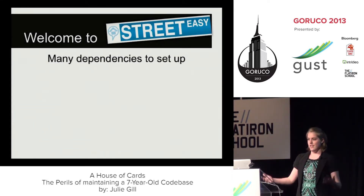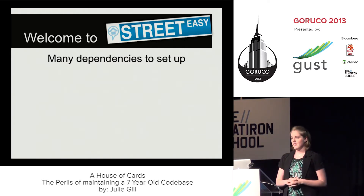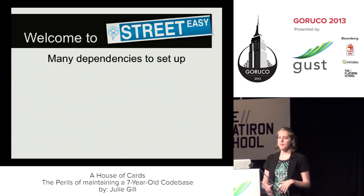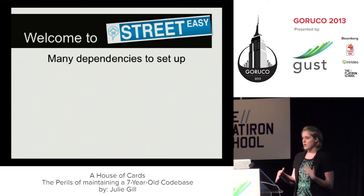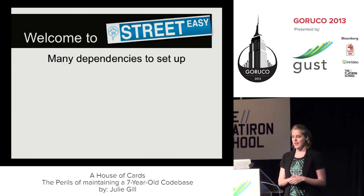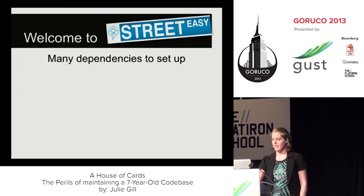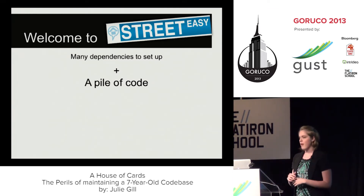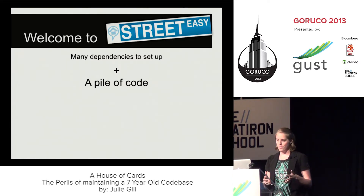So, welcome to StreetEasy. I spent my first week setting up my dev environment. There are so many dependencies to set up — homebrew, MySQL, RVM, all the gems, Chef and Knife, ImageMagick. Coming from apps that I had built from scratch, I never had to set up someone else's codebase before. Then you add on a pile of code: models, helpers, modules, views and partials, controllers, and a whole heap of metaprogramming. I'd never seen so much code in one place, and I even took that cool class where you get to build a compiler. That was nothing.